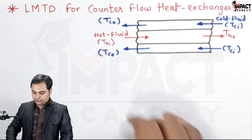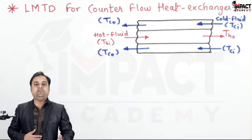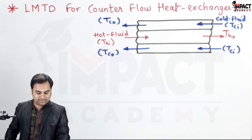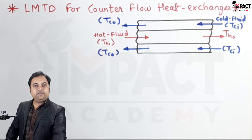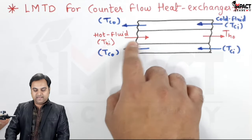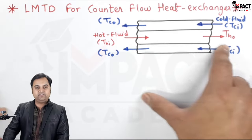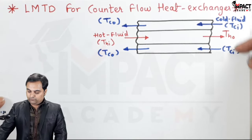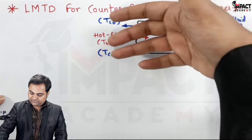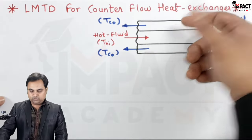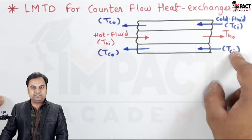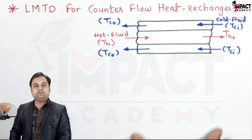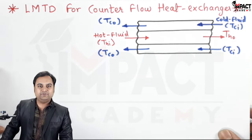Here we have two fluids — hot fluid and cold fluid — and there will be an exchange of heat between both of them. The hot fluid is entering from the left side at temperature Thi and leaving the heat exchanger at temperature Tho. Similarly, the cold fluid is entering from the opposite end, that is from right towards left, having inlet temperature Tci and exit temperature Tco.